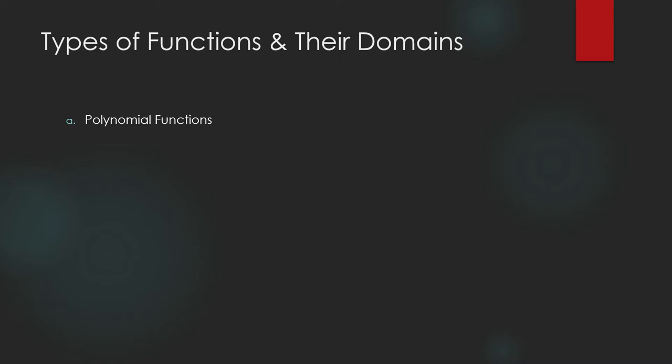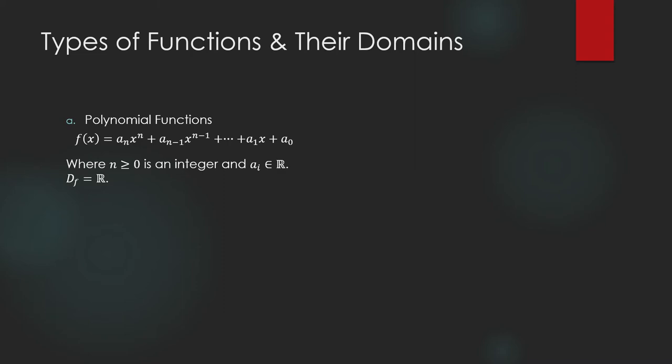Let us go into a few types of functions. There are so many classes of functions; we cannot possibly talk about all of them, so we will enumerate a few and look into their domains. This is how a polynomial function looks like, where n is a non-negative integer — it can be zero or greater — and the coefficients are real numbers. A polynomial function is defined for any real number x, which is why the domain is the set of real numbers.